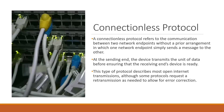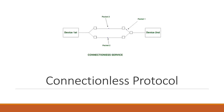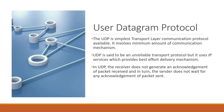This is the structure of connectionless protocol — the sender, the receiver, and packets of data, each routed by different routers. The example of connectionless protocol is UDP, User Datagram Protocol. UDP is the simplest transport layer communication protocol, involving the minimum amount of communication mechanism. UDP is considered an unreliable transport protocol, but it uses IP services which provide a best-effort delivery mechanism. In UDP, the receiver does not guarantee acknowledgement of packets received, and the sender does not wait for any acknowledgement.